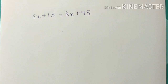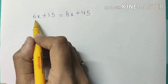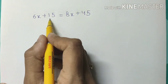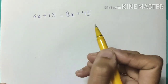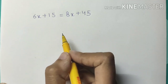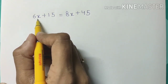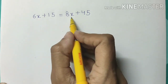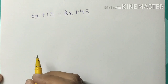Let's start with linear equations which have variables on both sides. For example, our first equation is 6x + 15 = 8x + 45. Here we have x on the left-hand side as well as on the right-hand side.